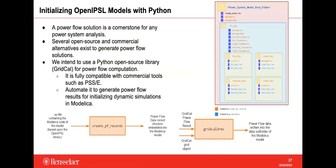We are also working on initializing OpenAPSL models using powerflow results from a Python application called GridCal. A Python script takes the .mo file and converts it into a GridCal-readable document, which GridCal then reads to perform the powerflow. The powerflow results are used to populate records located in a sub-package of the model, allowing the model to initialize its simulation at a specific equilibrium point.